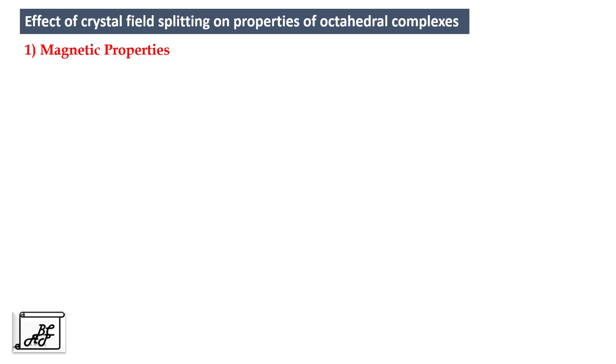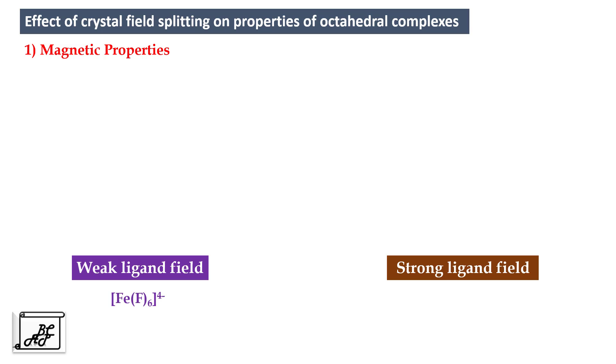Let's begin with magnetic properties. We know that there are two types of ligand fields, weak ligand field and strong ligand field. For weak ligand field I am considering the example of FeF6- and for strong ligand field I am taking example of FeCn6-. Here F- is the weak ligand and cyanide is the strong ligand.